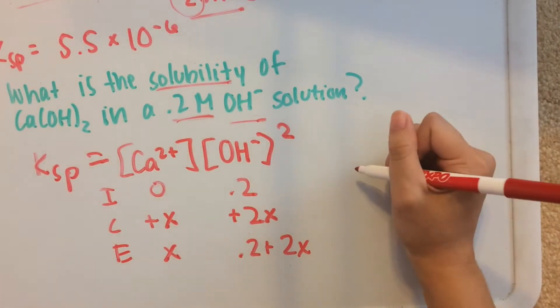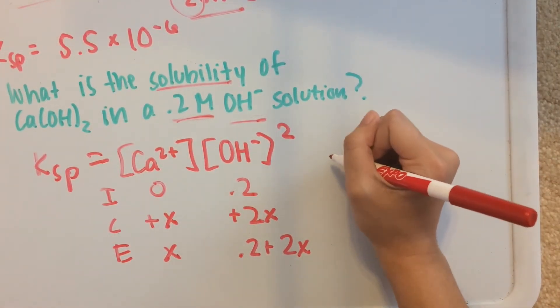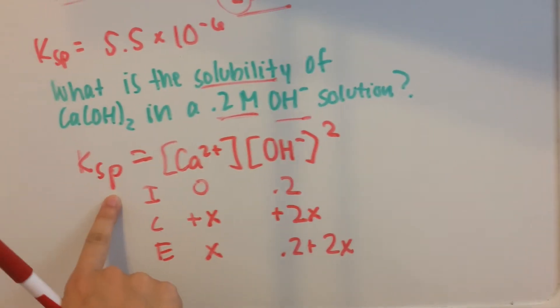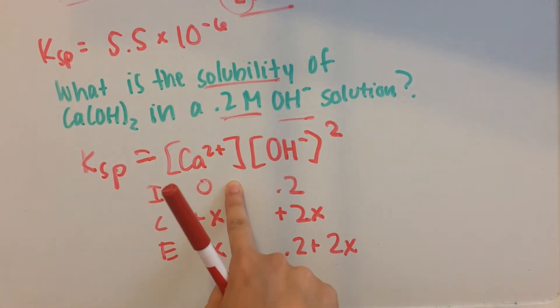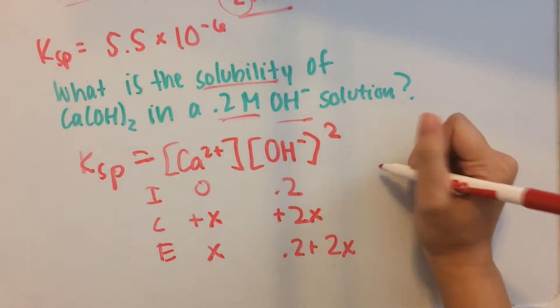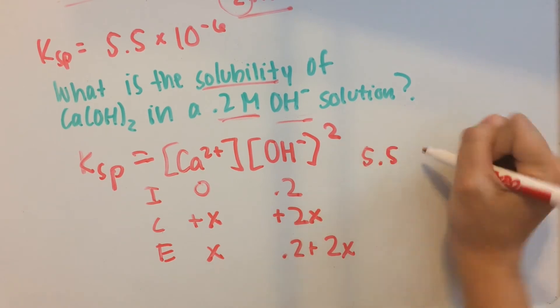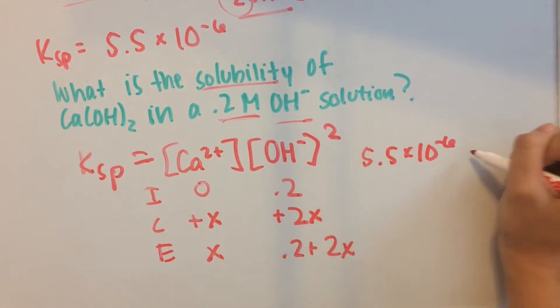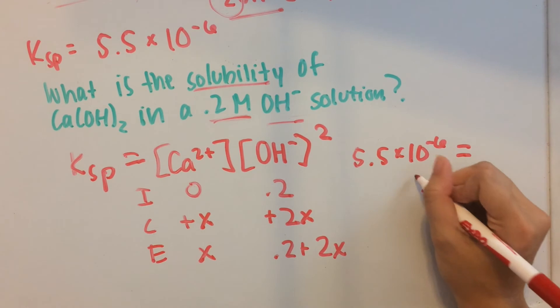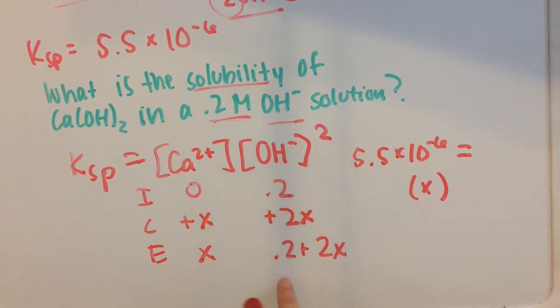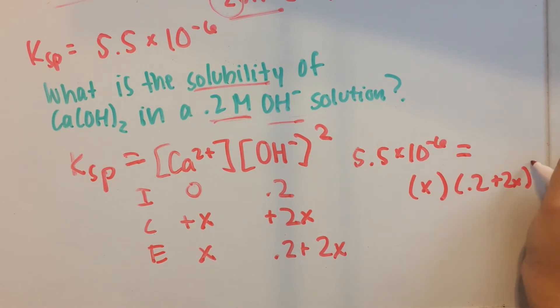Now let's do this over here. We have Ksp equals concentration of Ca²⁺ at equilibrium. So Ksp is 5.5 times 10⁻⁶ equals x times (0.2 plus 2x) squared.